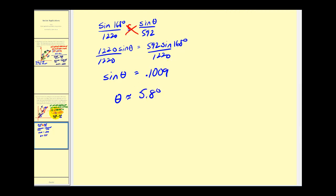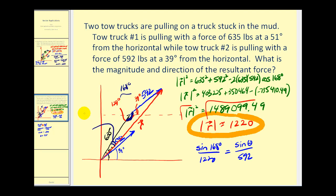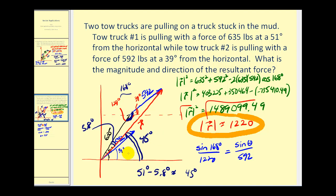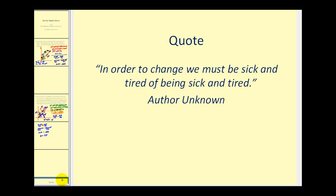Let's go back to our sketch. This angle here is approximately 5.8 degrees. Remember, this black vector formed a 51 degree angle with the positive x-axis. So if that's 51 degrees and we subtract 5.8 degrees, that gives us our direction angle — approximately 45 degrees with two significant digits. So our direction here is approximately 45 degrees. Hopefully you found this explanation helpful. Have a good day.